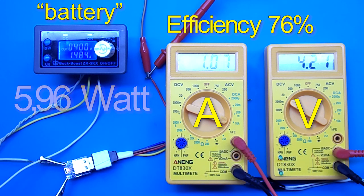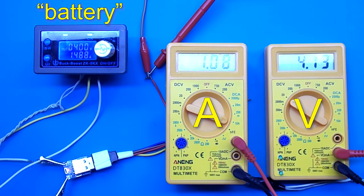If you increase the charging current even more, then the protection is activated and the converter turns off. It turns out that this converter gives a maximum current of about 1 ampere to charge the phone.